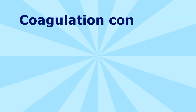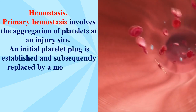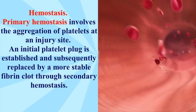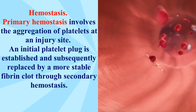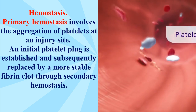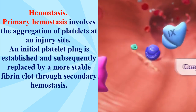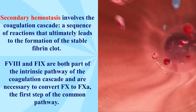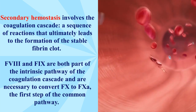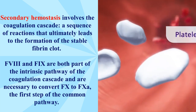Coagulation consists of two processes: primary and secondary hemostasis. Primary hemostasis involves the aggregation of platelets at an injury site, where an initial platelet plug is established and subsequently replaced by a more stable fibrin clot through secondary hemostasis. Secondary hemostasis involves the coagulation cascade, a sequence of reactions that ultimately leads to the formation of the stable fibrin clot.